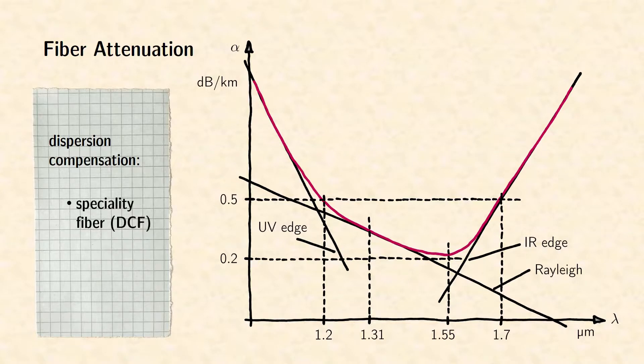Standard is the use of dispersion compensating fibers with a special refractive index profile, which results in a high waveguide dispersion. However, modern transmission systems are also able to compensate chromatic dispersion using high-speed signal processing.